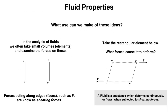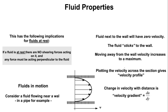For example, if we have an element of fluid and we subject a force at points B and C, this rectangular shape will deform as a result of these two forces. If it's a fluid it will continue to deform — it will flow once subjected to this shearing force. Whereas if it is a solid, when you apply this shearing force, it has the ability to resist deformation.